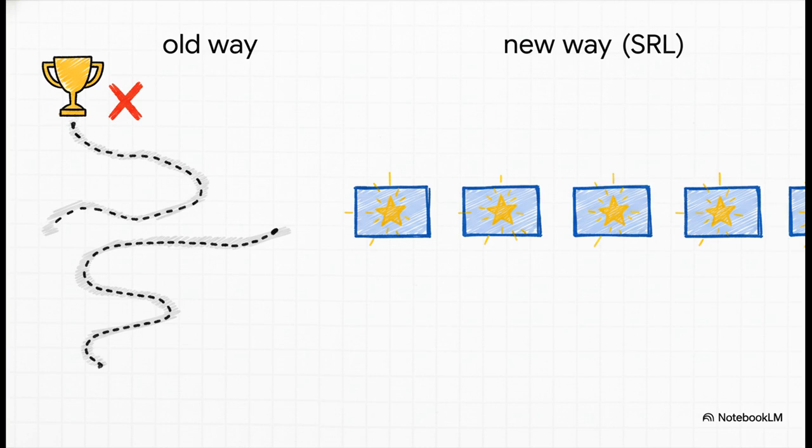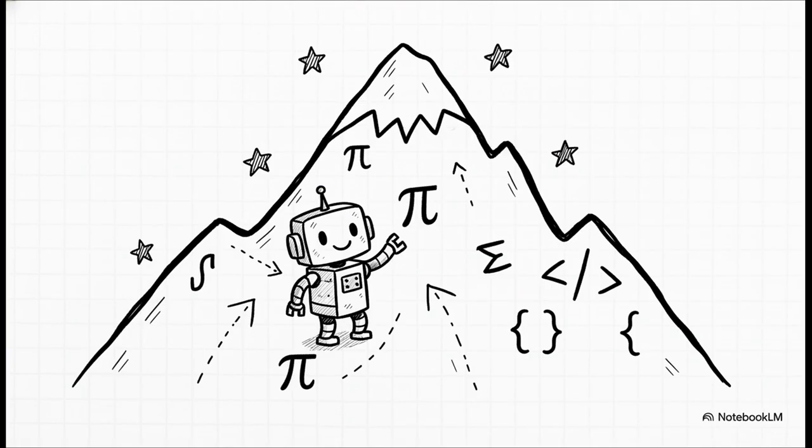SRL completely flips that on its head by giving this constant stream of feedback, rewarding every little micro decision the model makes along the way. And here's where it gets really wild. This method has a huge impact on smaller, more efficient models.